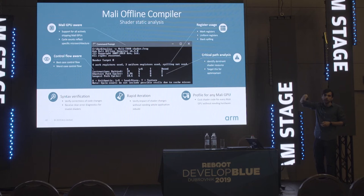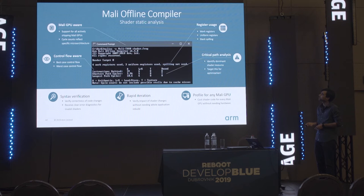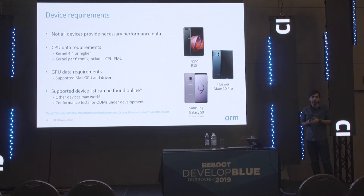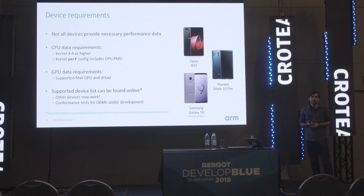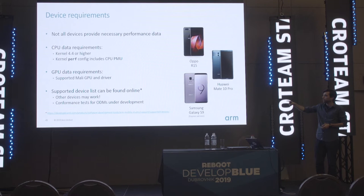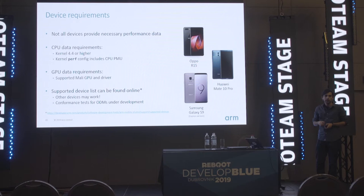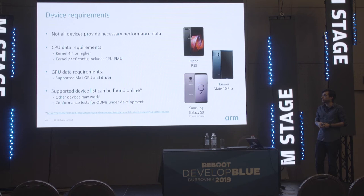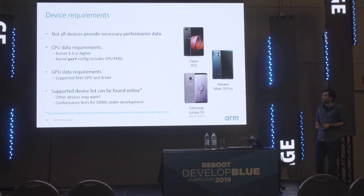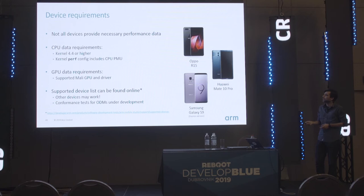Shaders can be run through the Mali Offline Compiler, which checks syntax, gives you the longest critical path, and breaks it down into functional units — arithmetic, load-store, or texture operations. This is integrated into Graphics Analyzer, making it easy to sort shaders from heaviest to lightest. Since Android does not impose a specific level of data access on all devices, not every device is supported off the shelf — we maintain a tested device list on our developer website, and device manufacturers can add their devices through a conformance test suite.